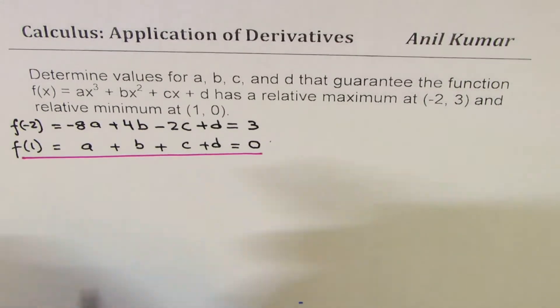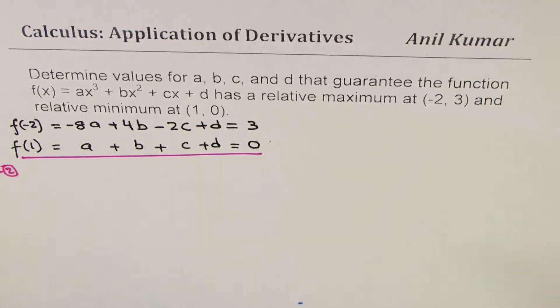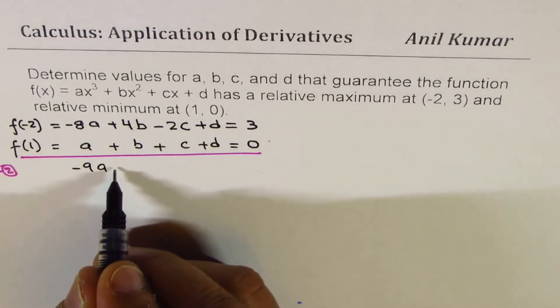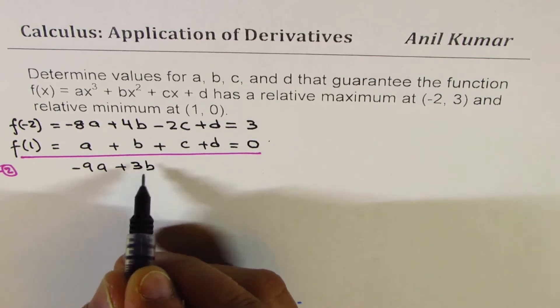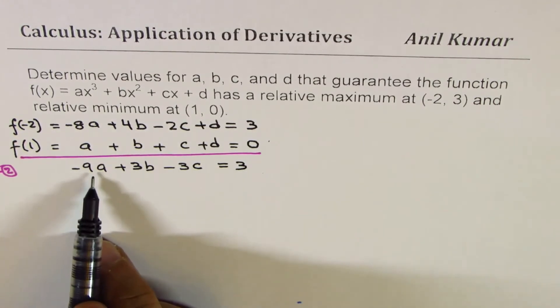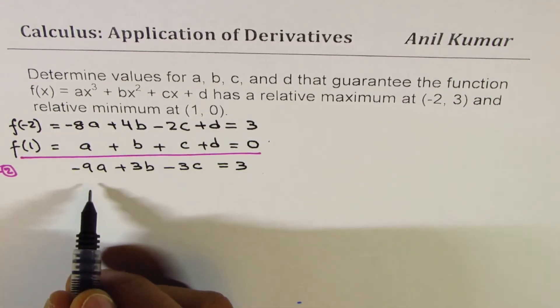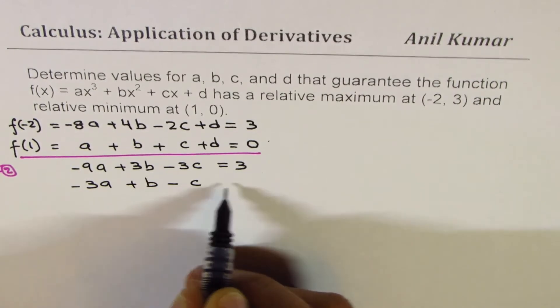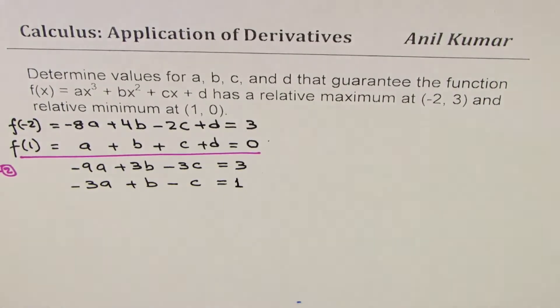See what happens if I do equation 1 minus equation 2. We can actually eliminate d and get the equation -9a + 3b - 3c = 3. Now we can divide by 3, so we get -3a + b - c = 1. I'll call this as my equation number 3.